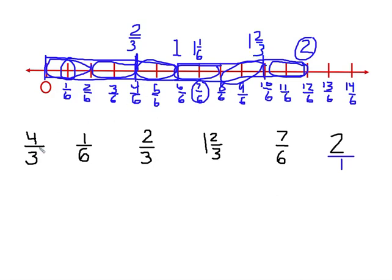So now I have identified where is one-sixth, I've identified two-thirds, I've identified one and two-thirds, I've identified seven-sixths, and two wholes. I'm left with four-thirds.